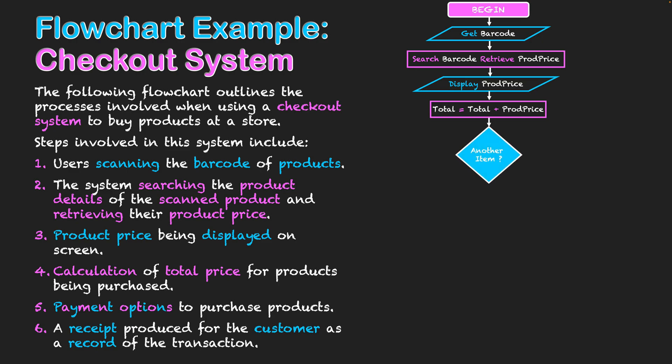Then we get to a decision — this is a post-test repetition. The first thing we decide is: is there another item? I can buy one item on its own, but if it's a grocery store I'm probably buying many items. So that creates the body of the loop. I can scan my second product, retrieve its barcode and product price, and now the total will equal my first product price plus the new product price of my second product added together, giving me a total for two products. That pattern continues for each product.